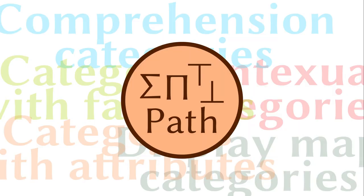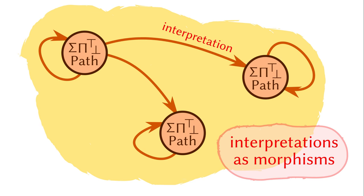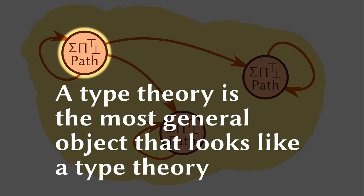There are at least ten different ways to write down what it means by something that looks like a type theory. Some are closer to the syntax, for example, demanding context to be of finite length. Some allow arbitrary context as long as they support all the operations on context. No matter how you define a type theory-like object, such objects will form a category where a morphism between two objects is an interpretation that preserves all the type theoretic structures. Just like how the natural number type is the most general natural number algebra, the type theory will also be the most general object that looks like a type theory.